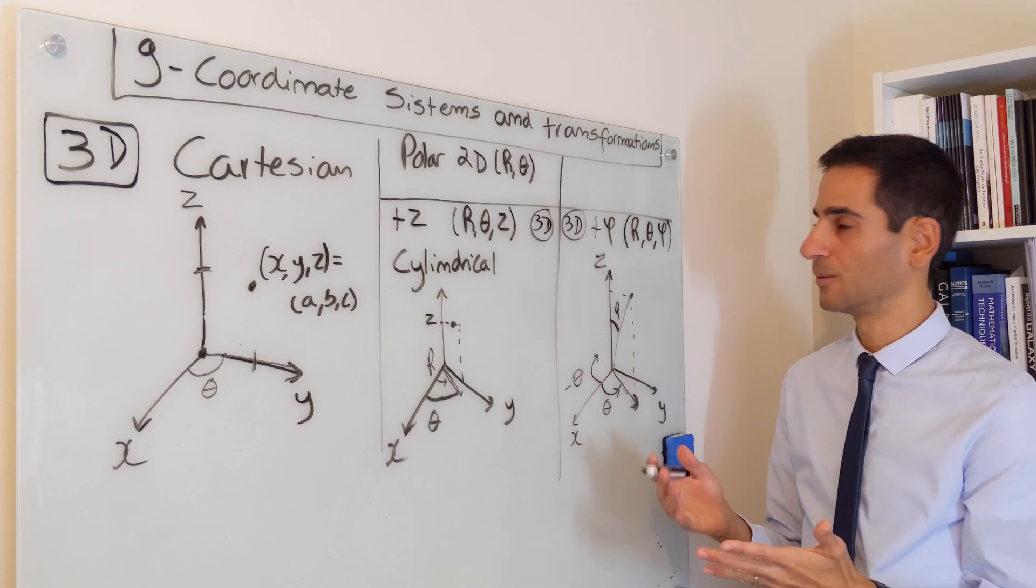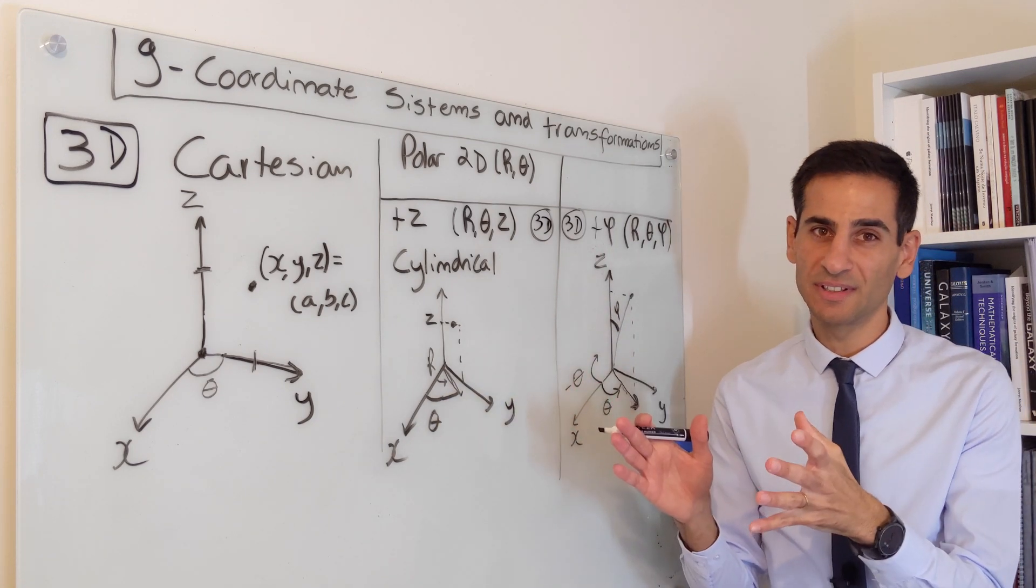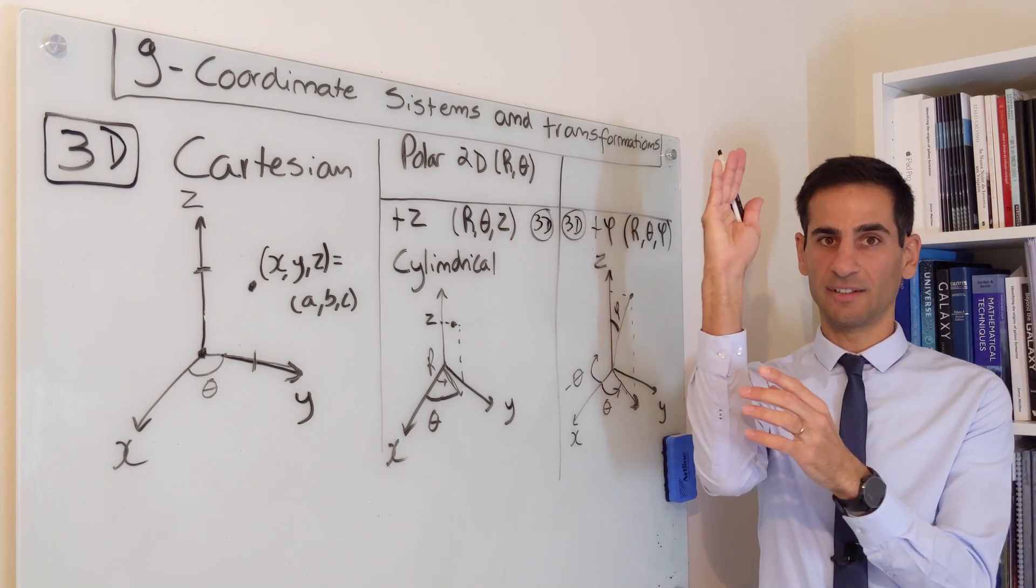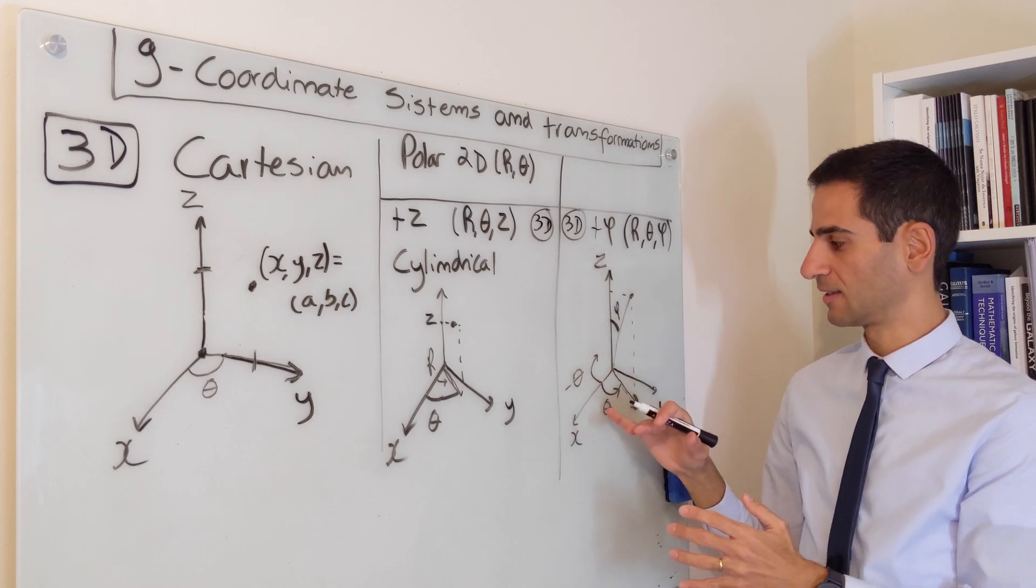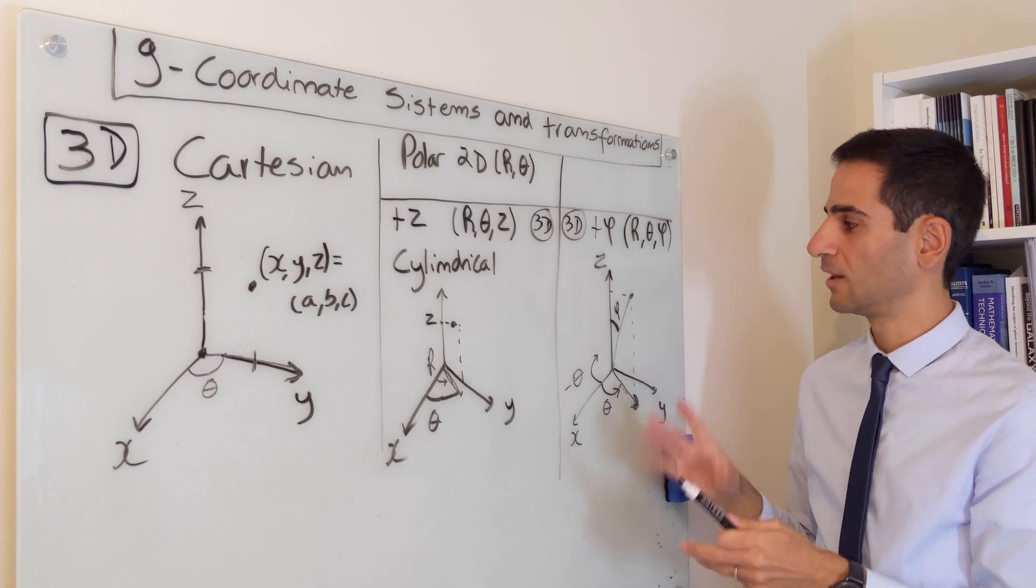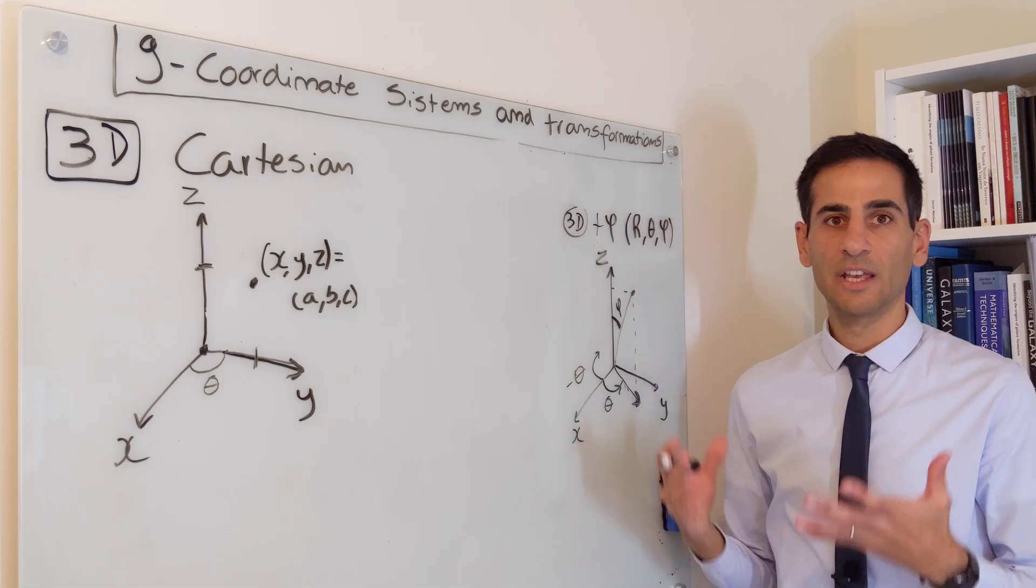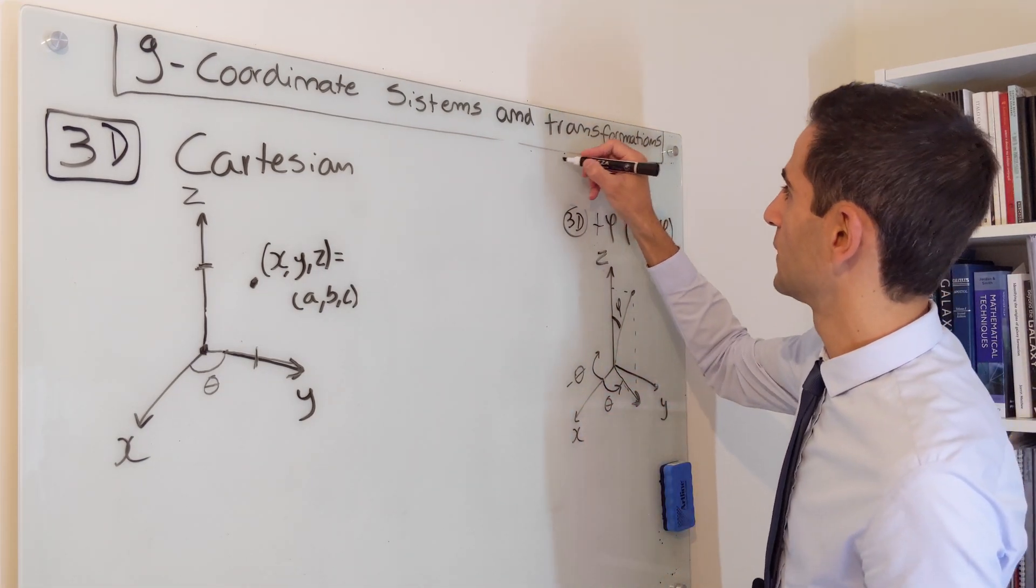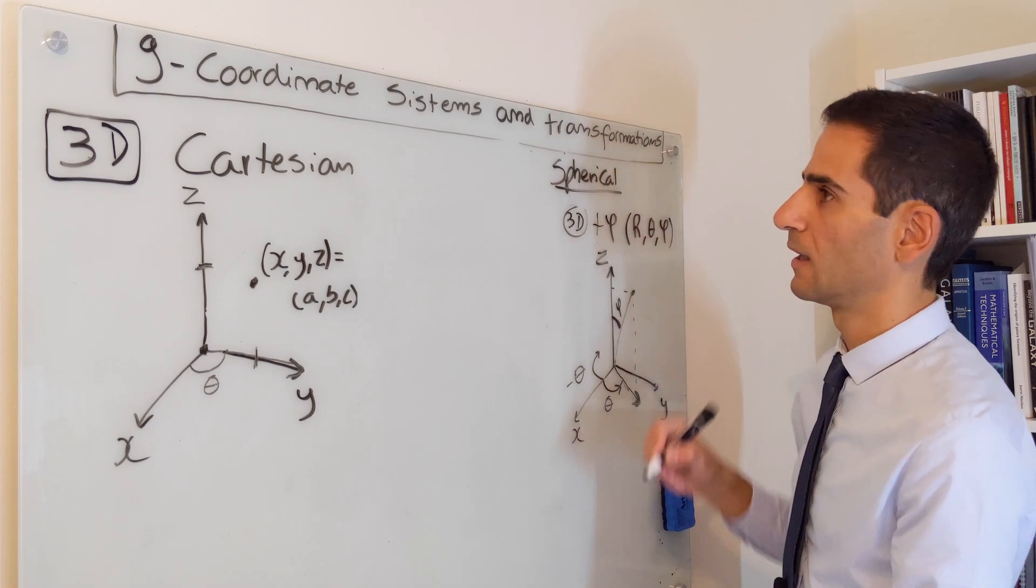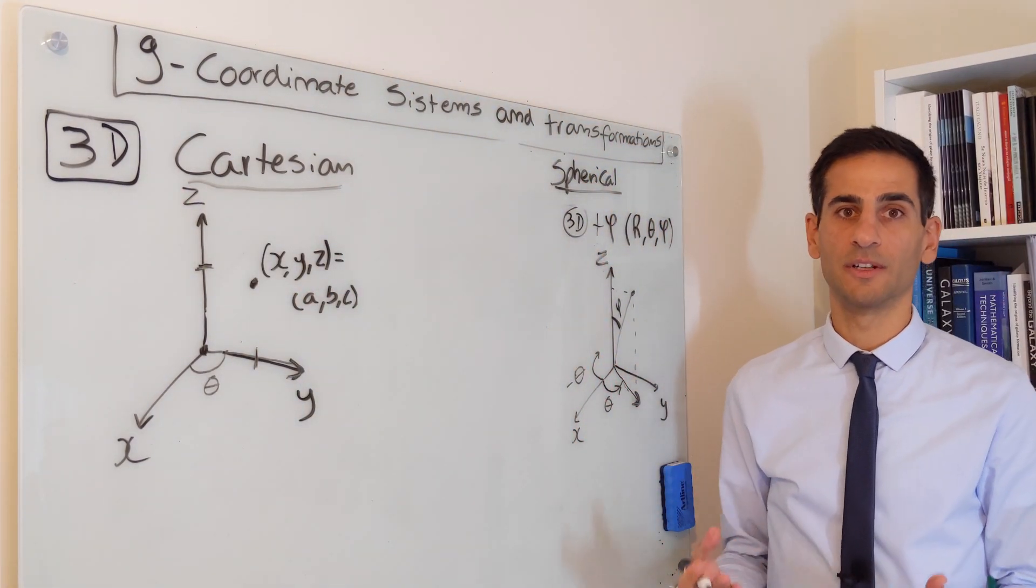The great advantage of defining things in this way is that theta is always the azimuth angle and phi becomes the zenith angle, the angle between 90 degrees and whatever your point is. And this is exactly the same here, here and also for 2D polar. It also means that we can very easily remember the coordinate transformations if we define the spherical coordinates and Cartesian coordinates in 3D in this way. It makes it very easy to remember coordinate transformations.